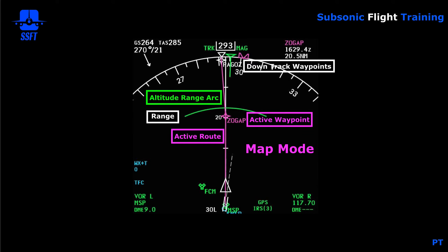Below that you have the active route, displayed as a magenta line. The airplane, when you're in LNAV or lateral navigation, will fly from waypoint to waypoint along that magenta line. An inactive route would be a blue dashed line, and a modified route would be a dashed white line. The active waypoint is always magenta. Any waypoints in front of the active waypoint — called down track waypoints — would be white.